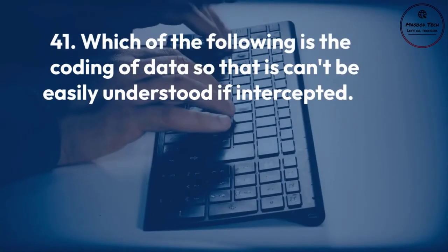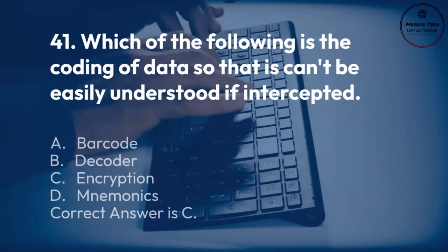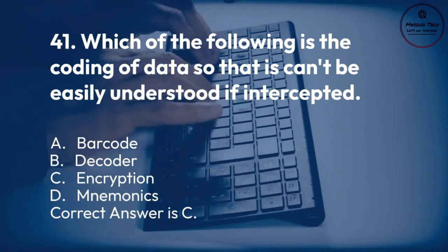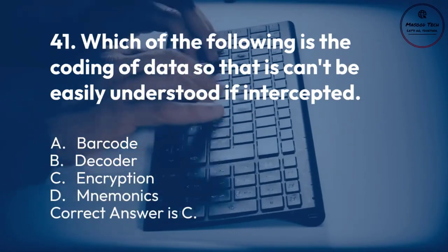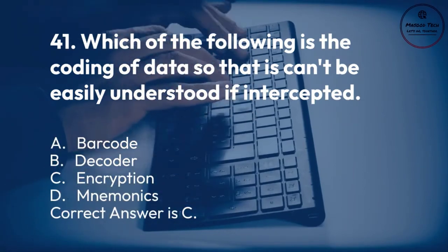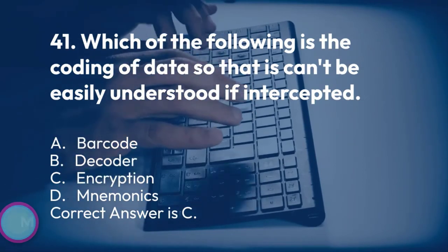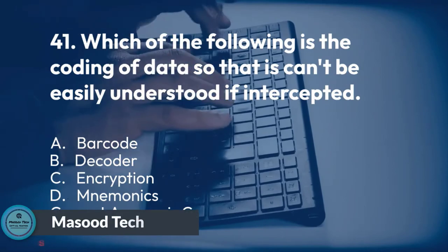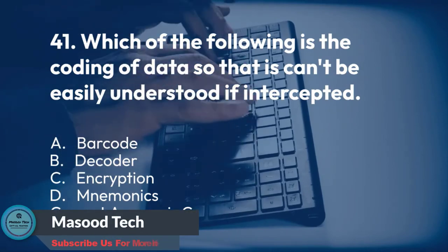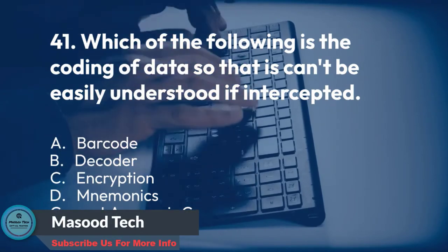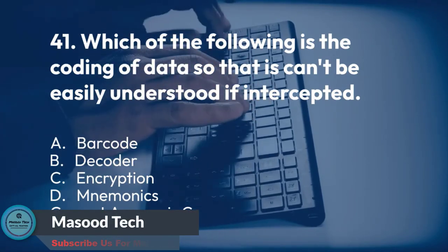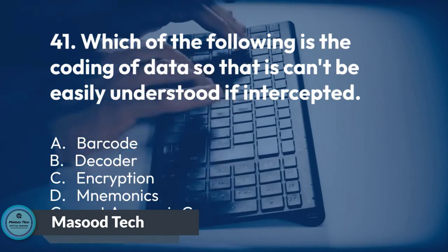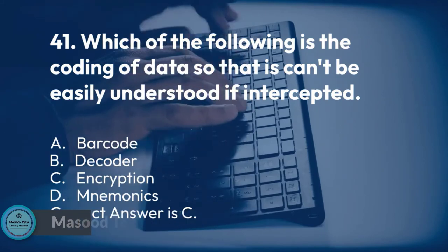Number 41. Which of the following is the coding of data so that it can't be easily understood if intercepted? A. Barcode. B. Decoder. C. Encryption. D. Mnemonics. Correct answer is C.